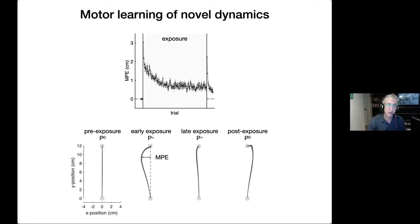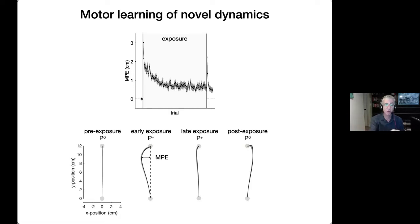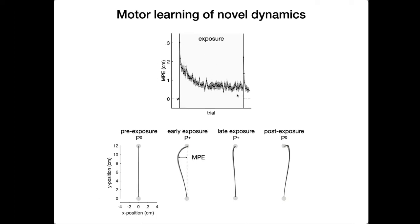One way to measure learning is to measure the deviation of the trajectory from a straight line — the maximum perpendicular error. The trouble with this measure is twofold: it doesn't allow us to quantify how much of the force field you've learned, and it's problematic because if you co-contract to stiffen up your arm, you can reduce error without true learning. So we want a better way to measure true learning.